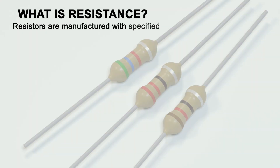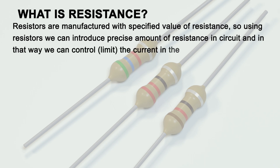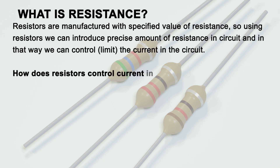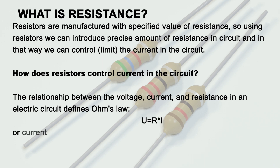Resistors are manufactured with a specified value of resistance, so using resistors we can introduce a precise amount of resistance in a circuit and in that way we can control and limit the current in the circuit.